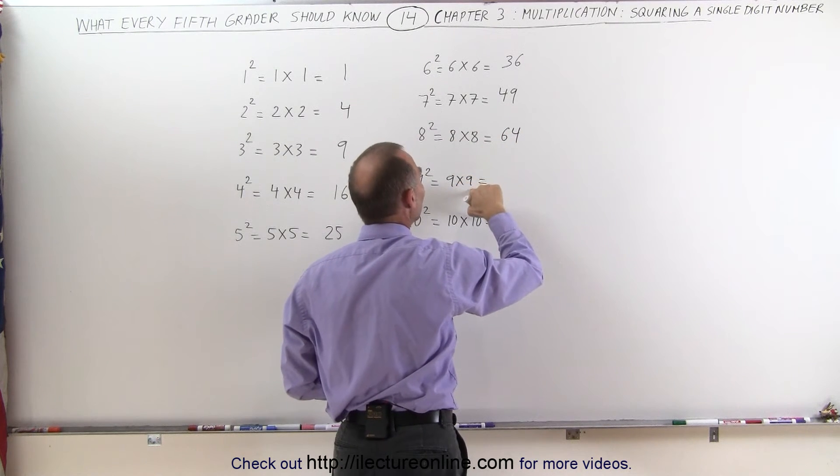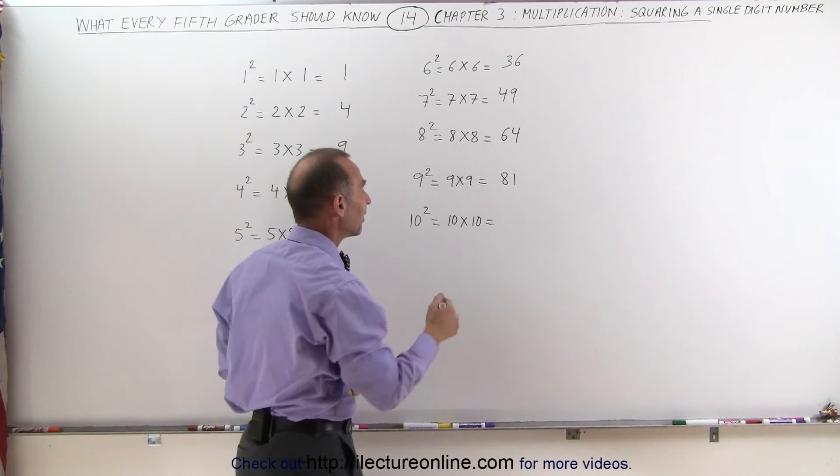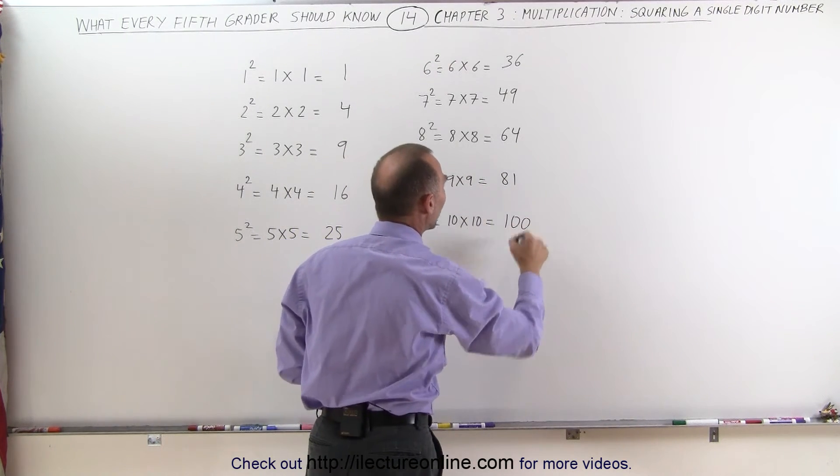9 times 9 is the same as 10 times 9 minus 9, which is 81. And then I just threw 10 squared in there, 10 times 10, which is equal to 100.